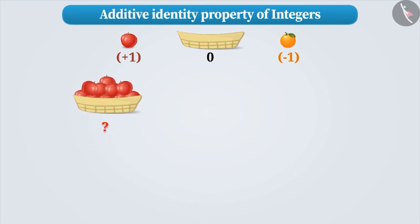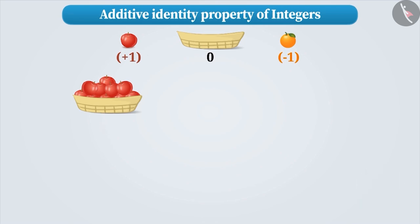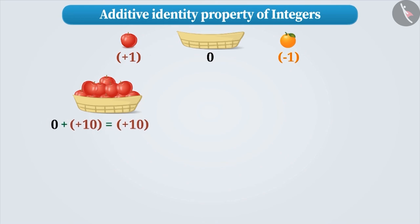Now, if we place 10 apples in the basket, then what will be the value of the basket? Since the value of the basket was 0, when 10 apples are placed in it, its value became plus 10. This is because adding 0 to plus 10 gives a value of plus 10.